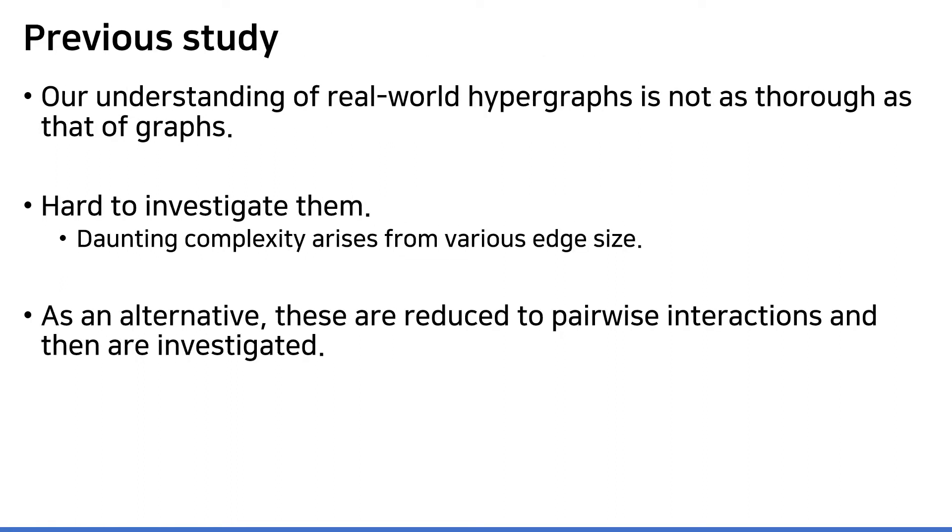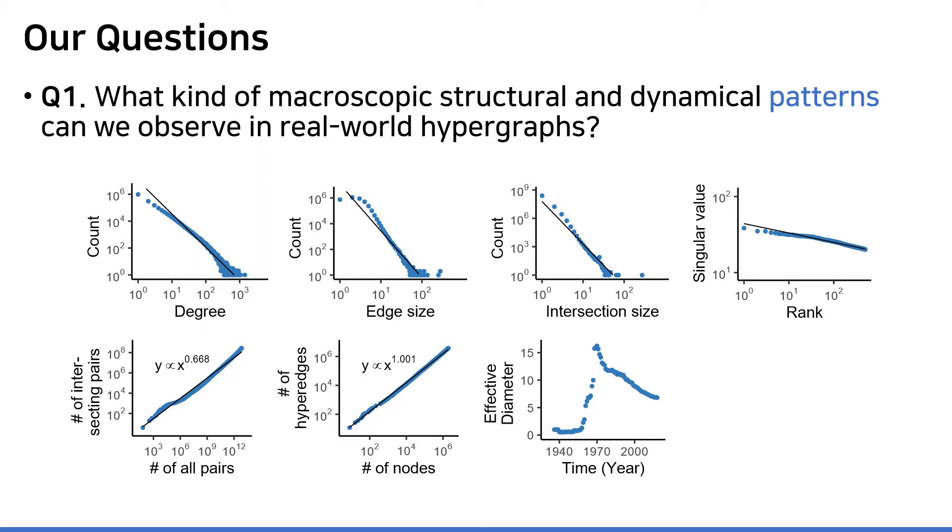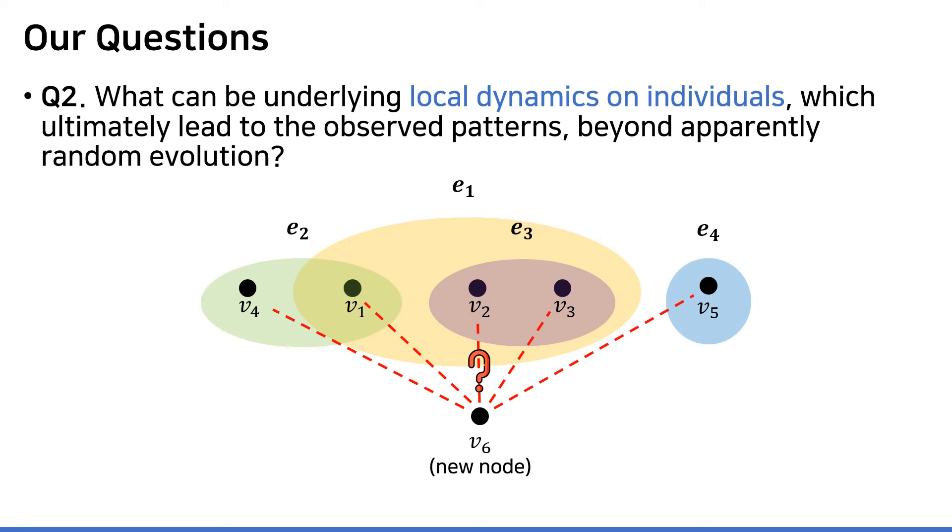But a tragedy is, our current understanding of real-world hypergraphs is not as thorough as that of real-world graphs. Due to various excuses, it is way harder to establish sort of general rules for real-world hypergraphs. So as an alternative, people take a detour by using the simple reduction technique which is explained before, and then investigating some properties on this reduced one. Driven by the importance of hypergraphs, we seek to answer the question: what can we observe from real-world hypergraphs? To this end, we examine four static and three dynamic patterns of real-world hypergraphs at macroscopic level, by revisiting well-known properties of ordinary graphs, and by devising new measures to capture higher-order interactions. Furthermore, we would like to answer the question of what can be local dynamics on nodes which result in these patterns, especially by proposing a random graph model.